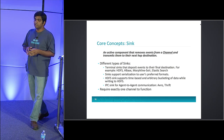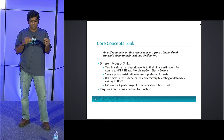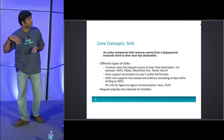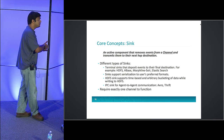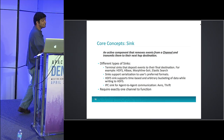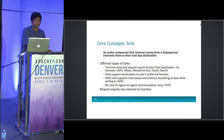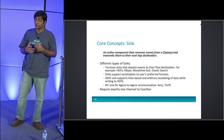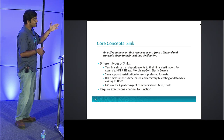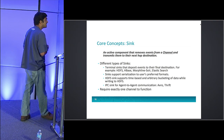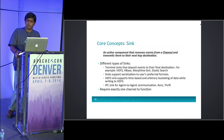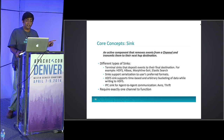Sinks are the components which either send data from one Flume agent to another or to a different destination. When you have HDFS or HBase, you have an HDFS sink that writes data to HDFS and an HBase sink that writes data to HBase. We generally categorize sinks into two types: terminal sinks and IPC sinks. Terminal sinks are the sinks that write data to the eventual destination. The more important terminal sinks are HDFS, HBase, Morphline Solr, and Elasticsearch.